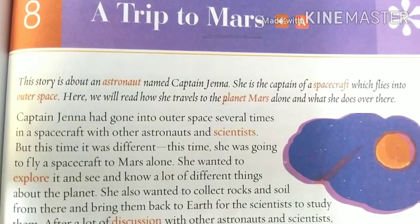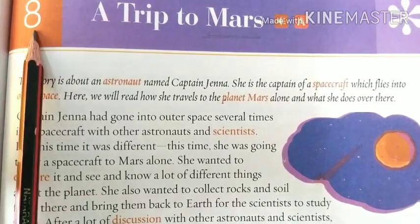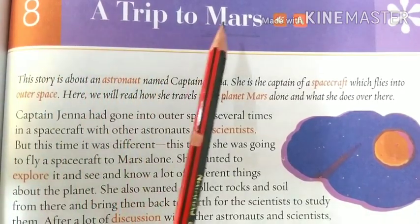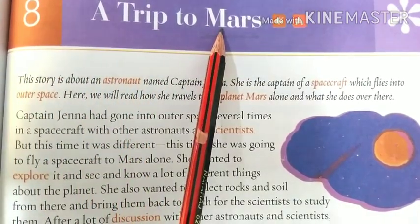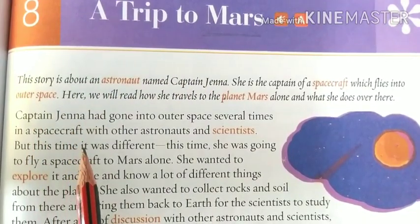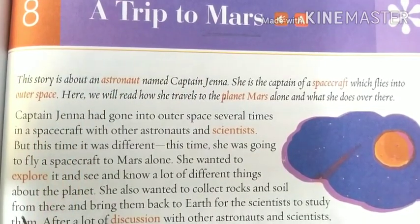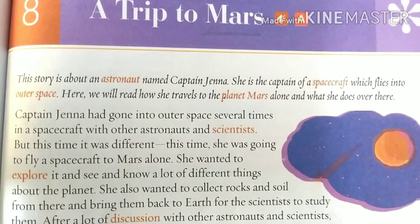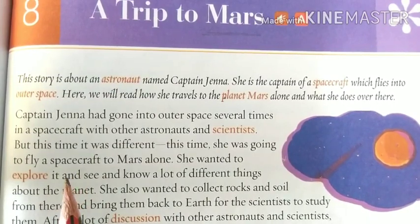Hello children, today we are going to study lesson 8th of Gulmohar, that is 'A Trip to Mars'. Mars is the fourth planet in the solar system, the fourth planet from the sun and the second smallest planet, being larger than only Mercury. It is also known as the Red Planet.